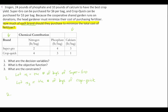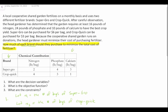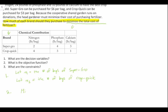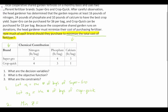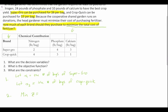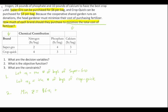We're then asked in question two: what is the objective function? We're asked how much of each brand should they purchase to minimize the total cost of fertilizer, so we have a minimization problem. We're going to write: min Z equals 6X1 plus 3X2. The cost of a bag of Super Grow is $6 and the cost of a bag of Crop Quick is $3. X1 is our variable for Super Grow and X2 is our variable for Crop Quick. This is our objective function.